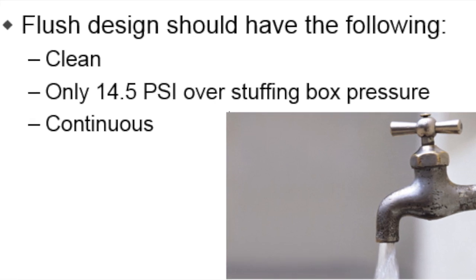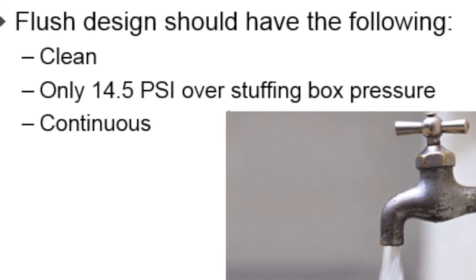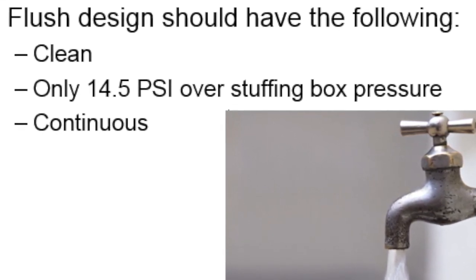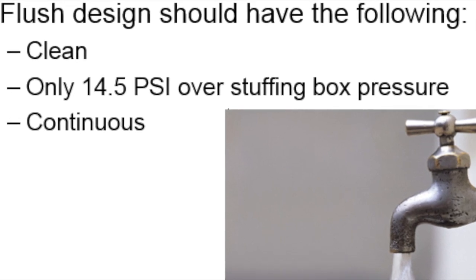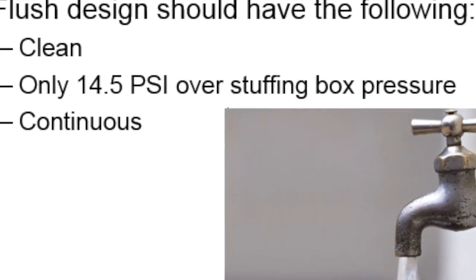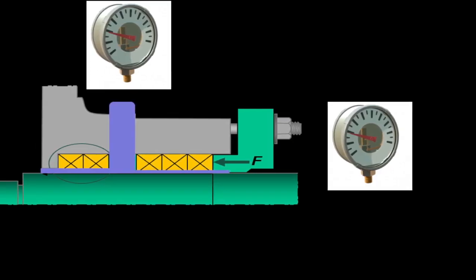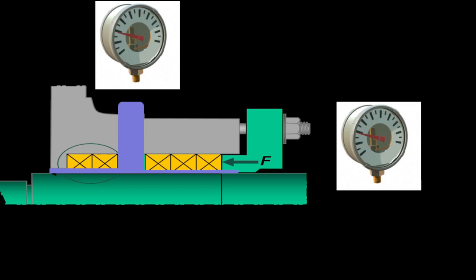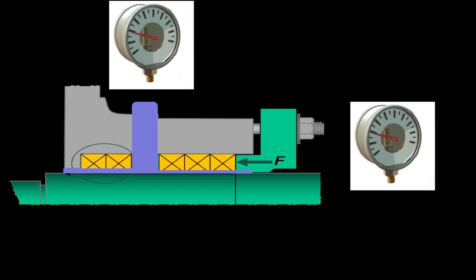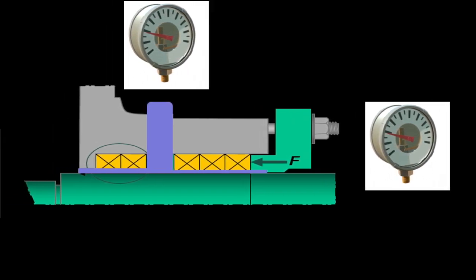For a barrier fluid to work, it needs to always have higher pressure than the stuffing box. This is very important since sometimes the pressure of the flush is inconsistent, resulting in reversing the flow. The pressure of a flush should be set to 1 bar above the stuffing box pressure.